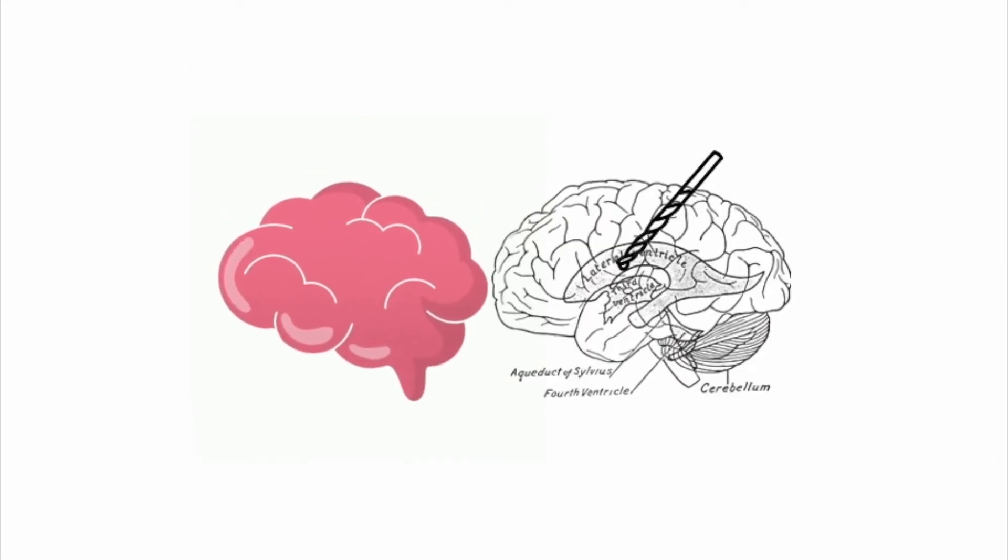For that reason, this is usually where we're going to place the EVD in the right lateral C-shaped ventricle, about five to six centimeters in.